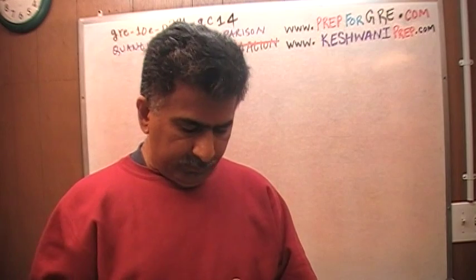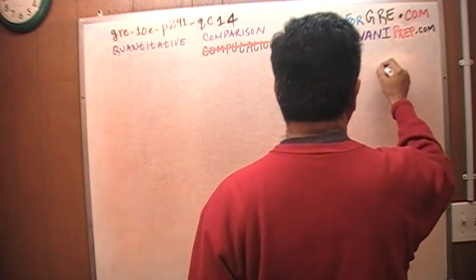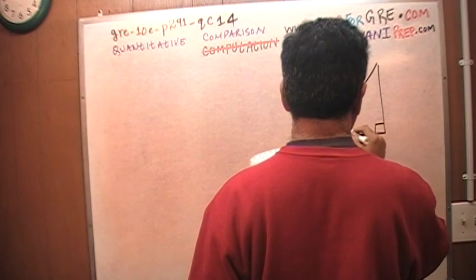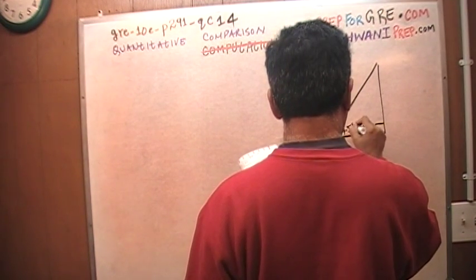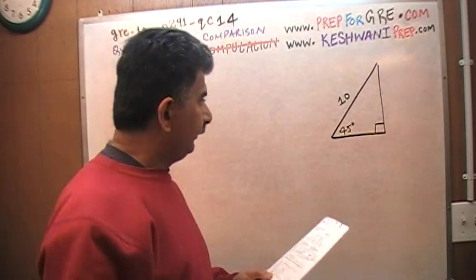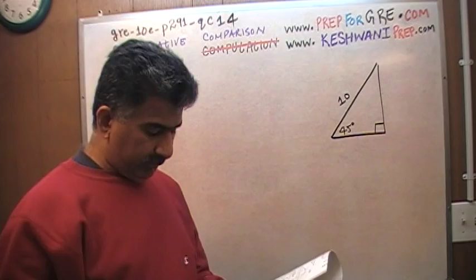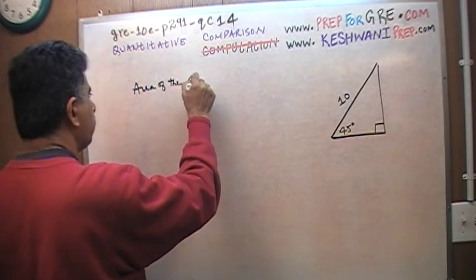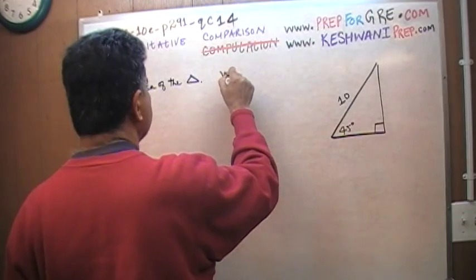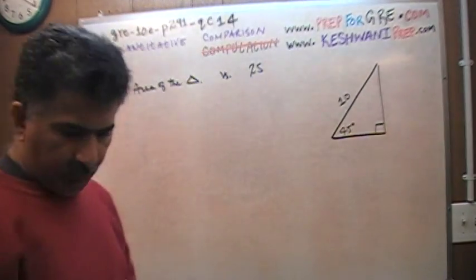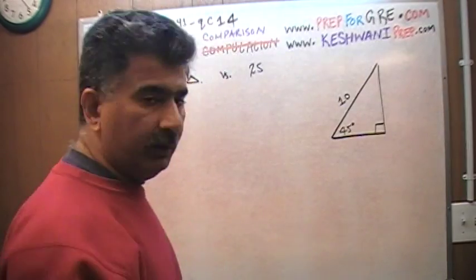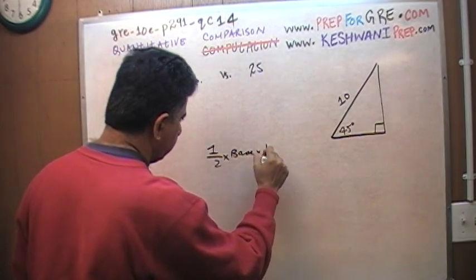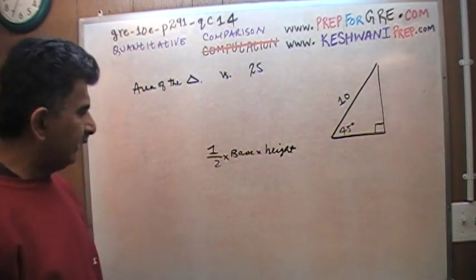They are asking you to compare the area of a triangular region. Let me draw it here. This is what we are given. And we are asked to find the area of this triangle. So we have the area of the triangle versus 25. But how do we find the area of a triangle? The area of a triangle, as you know, is one-half base times height.